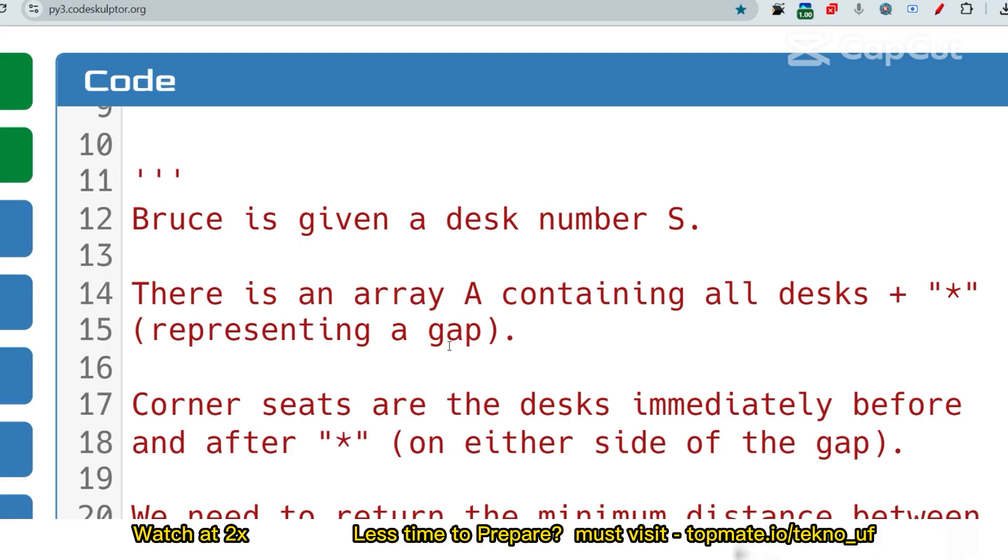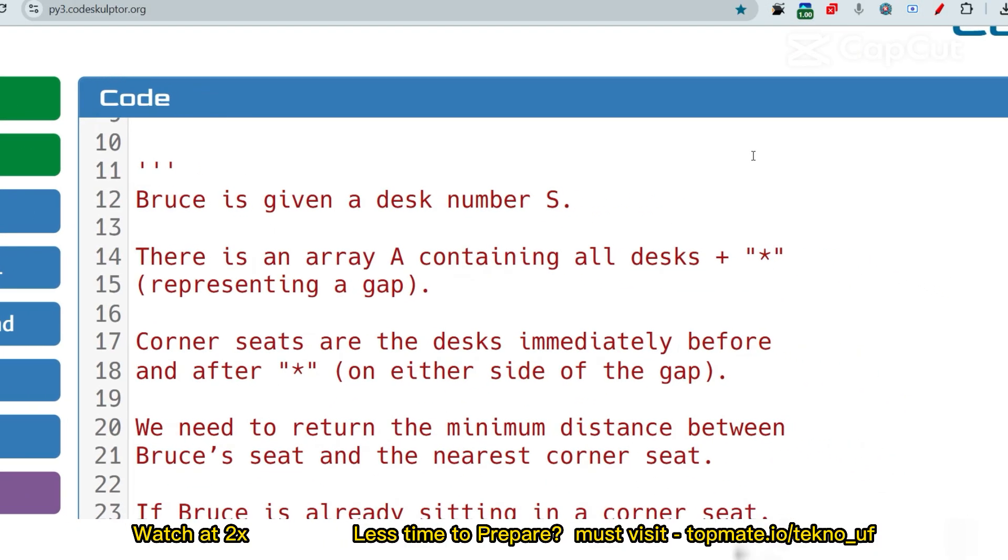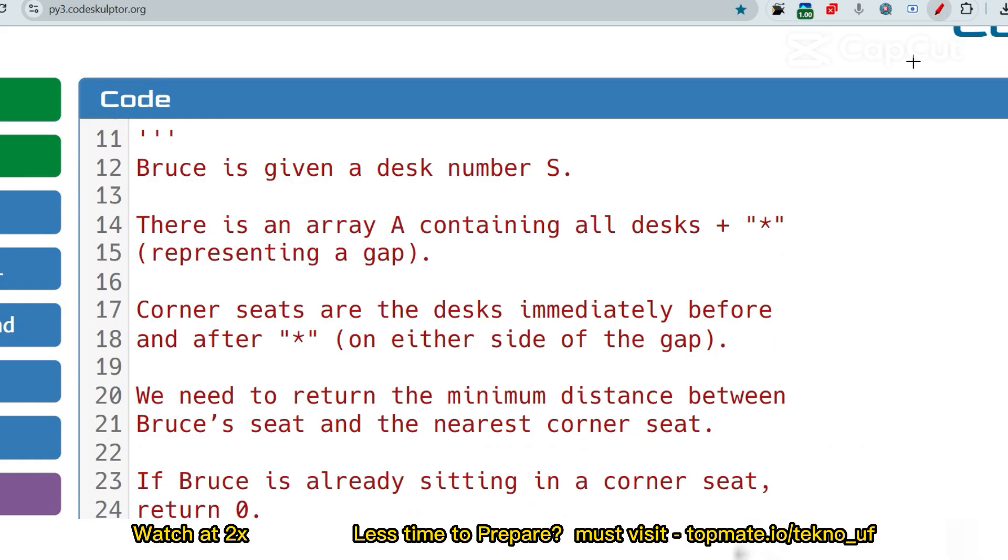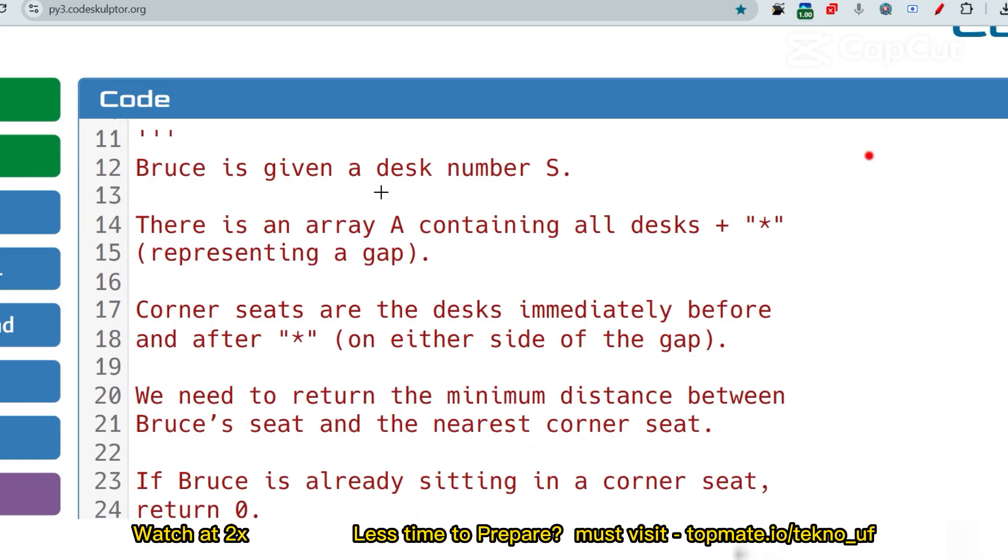There is an array A containing all desk numbers, plus a star representing a gap.